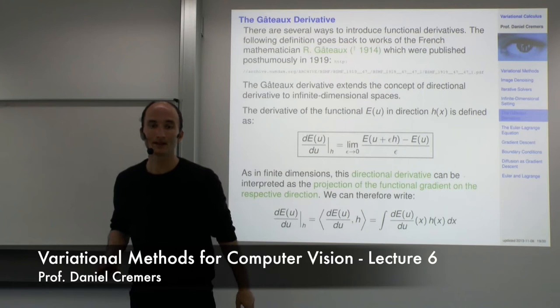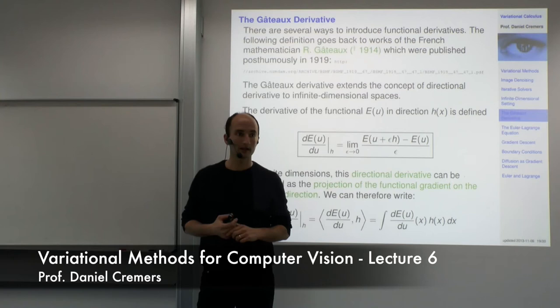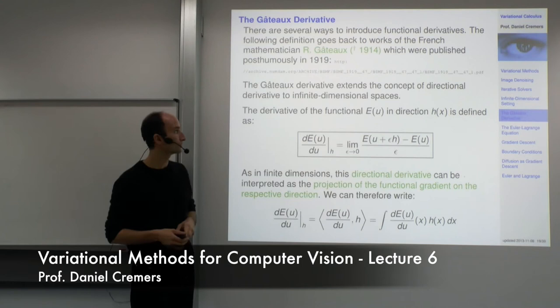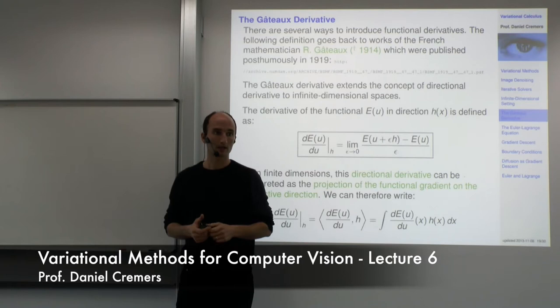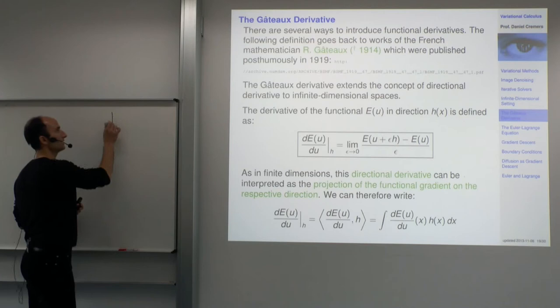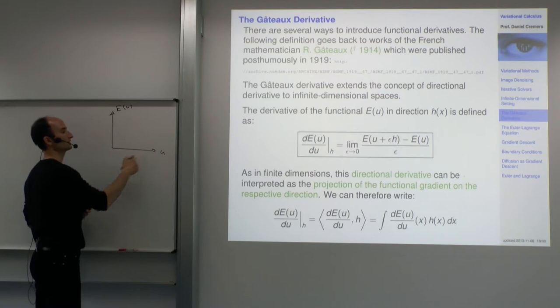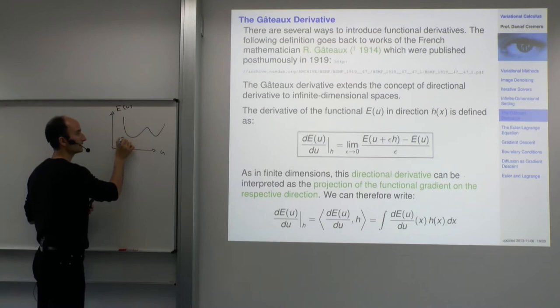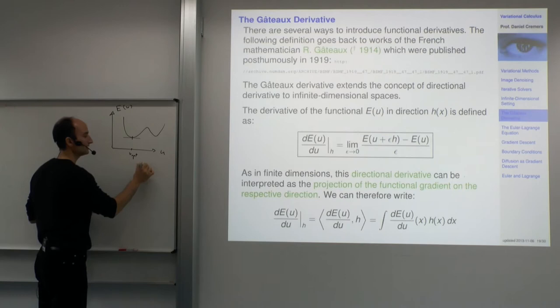Welcome to the next part of the class on variational methods. Last time we left off with the Euler-Lagrange equation as the extremality principle. The idea of variational methods is that we minimize energies over some space of solutions u by an extremality principle: we want configurations u optimal such that dE by dU equals zero.